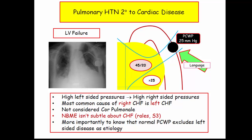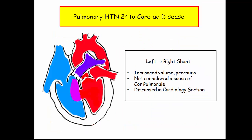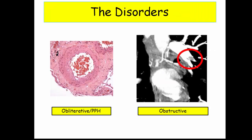CHF is included in our discussion of pulmonary vascular disease as it is a common cause of pulmonary hypertension and will need to be considered in the differential diagnosis. Left-to-right shunt is also a cause of pulmonary hypertension, covered in cardiology and rarely the target of a pulmonary hypertension question. These are the main players, and the majority of pulmonary vascular questions will relate to the rest of the material covered in this section.